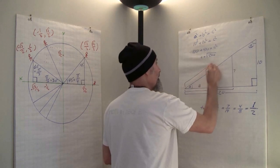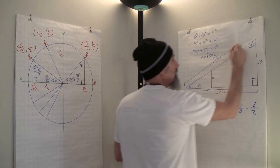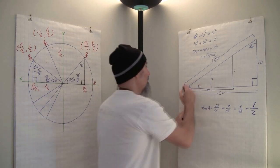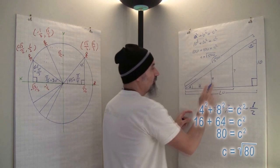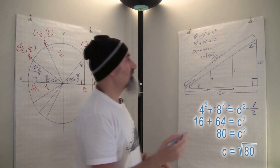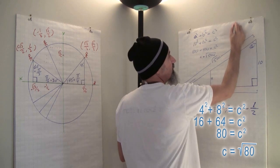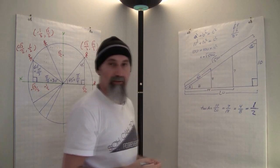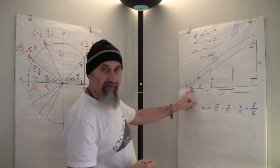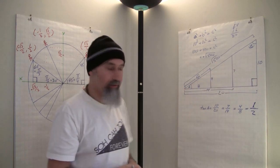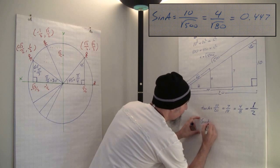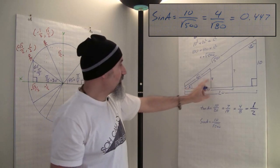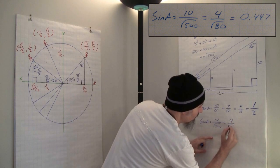So c is going to be the square root of 500 — that's the hypotenuse of the big triangle. For the little triangle, it's 4 squared plus 8 squared: 16 plus 64 equals 80, so the hypotenuse is square root of 80. Now, sine of A for the big triangle is 10 divided by square root of 500, and sine of A for the small triangle is 4 divided by square root of 80.